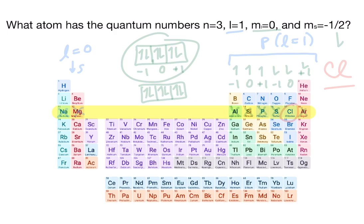Next, we can look at l equals 1, which tells us which subshell our atom is located in. If l were to equal 0, we would be in the s subshell, but because it equals 1, we are in the p subshell.